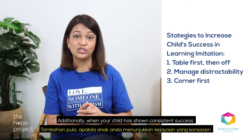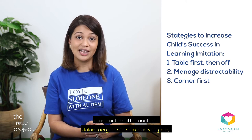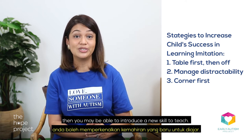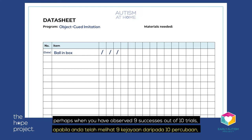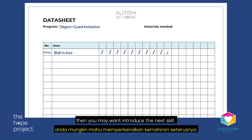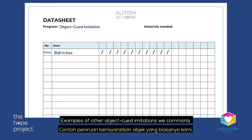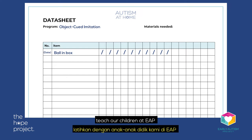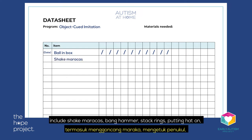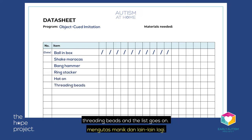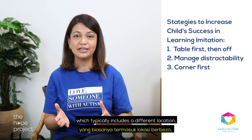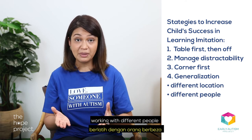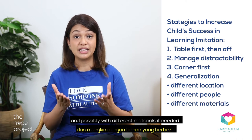When your child has shown consistent success in one action after another, you may introduce a new skill. As a general guideline, when you observe 9 successes out of 10 trials, you may want to introduce the next skill. Examples of object-cued imitations commonly taught at EAP include shake maracas, bang hammer, stack rings, putting a hat on, threading beads, and more. It is also important to practice learned skills in different settings — different locations, different people, and possibly different materials — to ensure your child can generalize and maintain the skills.